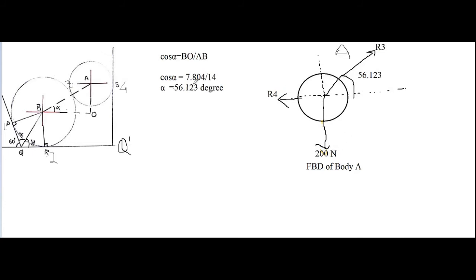This is the free body diagram of cylinder A. The weight of 200 Newton acts vertically downward. There is reaction R3, produced by cylinder B on cylinder A, acting along the direction from B to A and making an angle of 56.123 degrees with the horizontal. There is also the reaction R4 at contact point 4, which acts perpendicular to the contact surface.